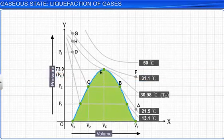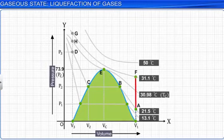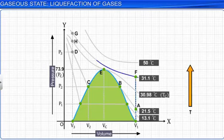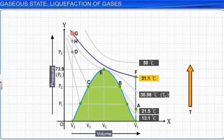For example, in the graph, we can move from point A to point F vertically by increasing the temperature. Point G can be reached by compressing the gas at constant temperature along the 31.1 degree Celsius isotherm. As the curve FG lies above the critical temperature, increase in the pressure does not result in the liquefaction of the gas. Hence, curve FG represents the gaseous state.